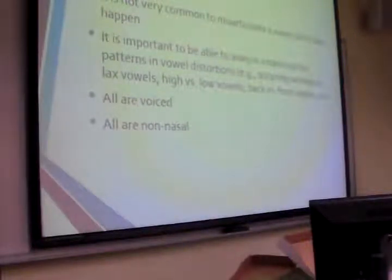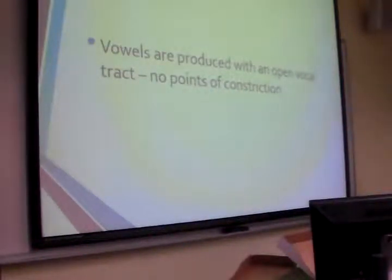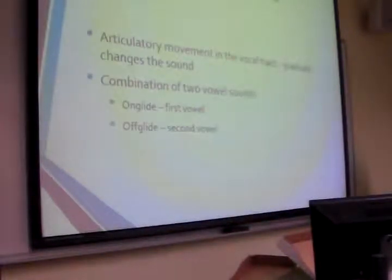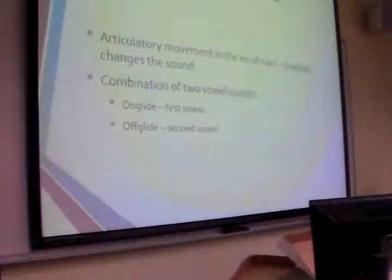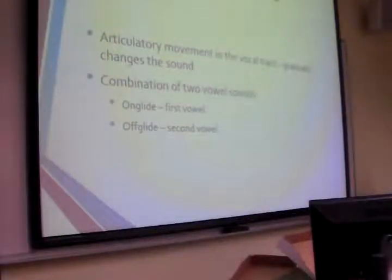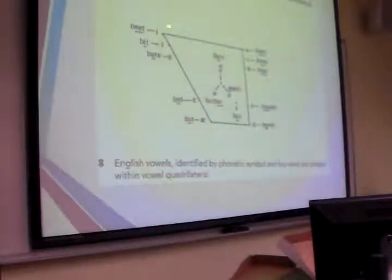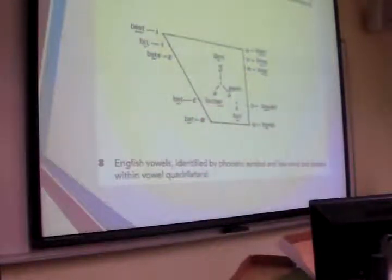Most kids have all vowels by the age of three. Vowels are produced with an open vocal tract — there's no constriction like a consonant that would actually restrict phoneme production. When we have diphthongs, this is two vowel sounds happening at the same time. It's a gradual articulation movement, and if that gradual movement changes, the first vowel is called the on-glide and the second vowel is called the off-glide.